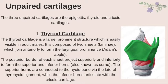Thyroid cartilage: it is a large prominent structure which is easily visible in adult males. It is composed of two sheets or laminae which join anteriorly to form the laryngeal prominence, also known as the Adam's apple. The posterior border of each sheet projects superiorly and inferiorly to form the superior and inferior horns, also known as cornua. The superior horns are connected to the hyoid bone through the lateral thyrohyoid ligament, while the inferior horns articulate with the cricoid cartilage.